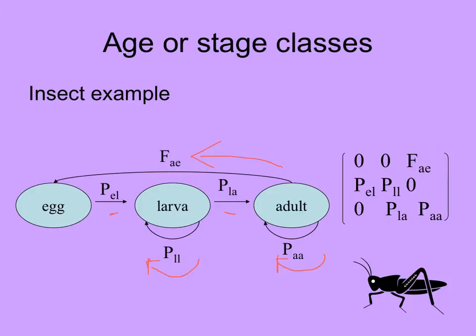If we put these into the matrix, the probability of an egg staying an egg doesn't exist — an egg can't remain an egg, it has to hatch. Here's the probability of the larva staying a larva, and the adult staying an adult. Here is the probability of the egg becoming a larva, the probability of a larva becoming an adult, and the fecundity of the adult. The other values in this matrix are zero, because those transition probabilities don't exist.